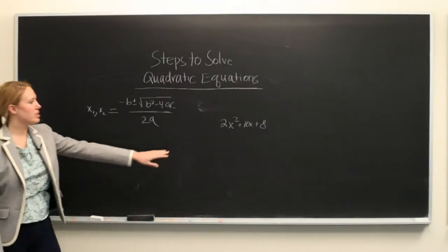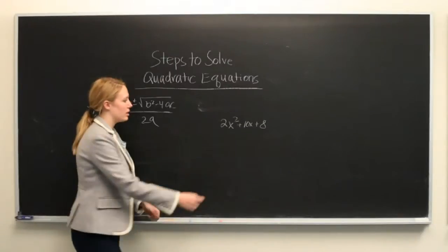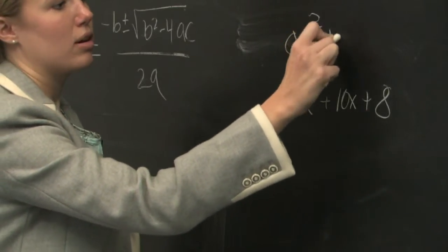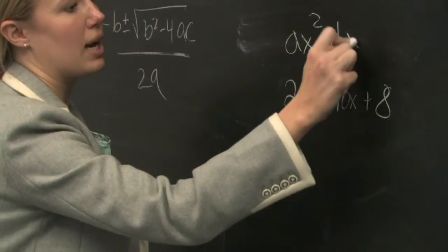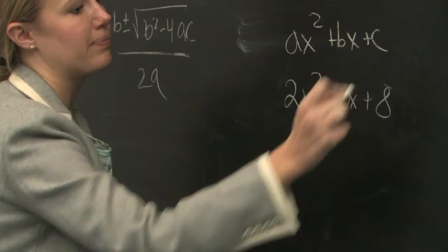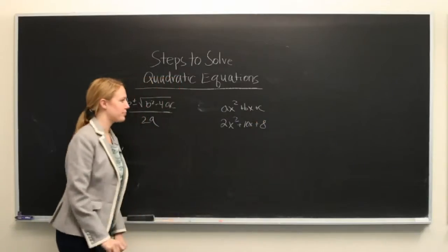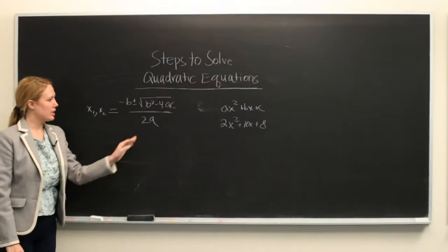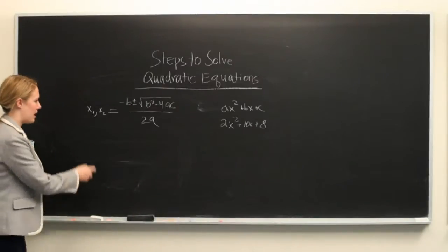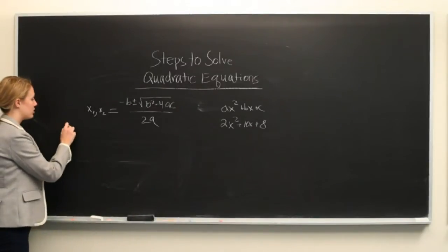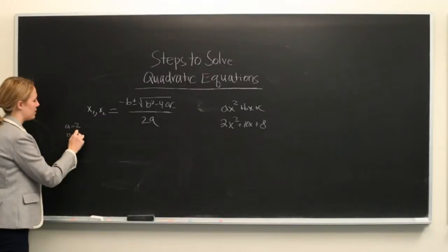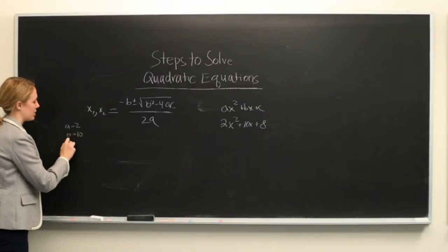So for this equation, it follows the form ax squared plus bx plus c, and we'll see that a is equal to 2, b is equal to 10, and c is equal to 8.